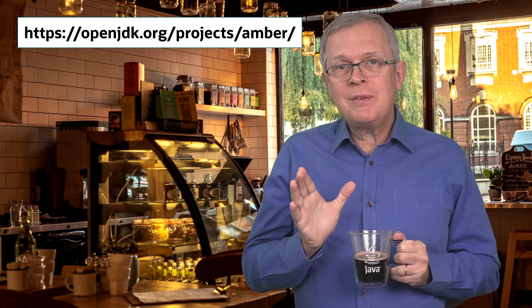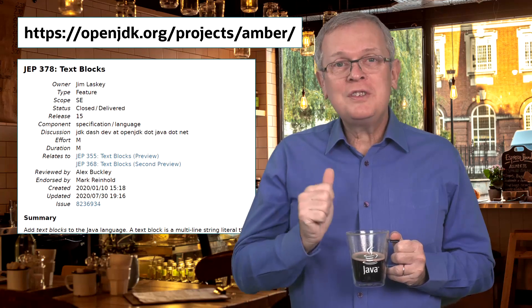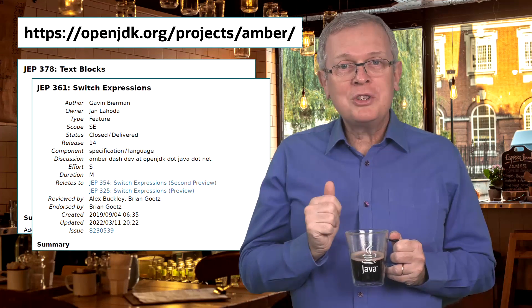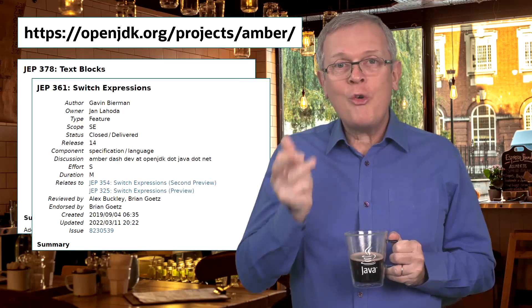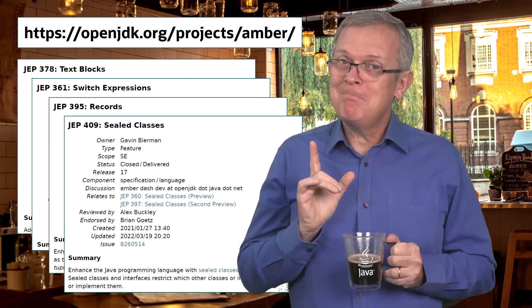First of all, just a quick recap. Project Amber is developed at the OpenJDK and has already delivered several key elements of the Java language. Among them are text blocks, an overhaul of switch statements, switch expressions, records, and sealed types. Not bad.